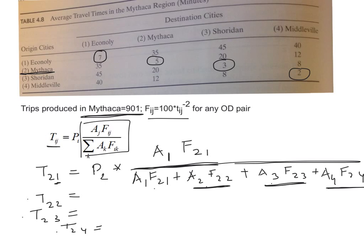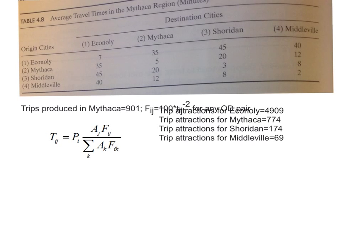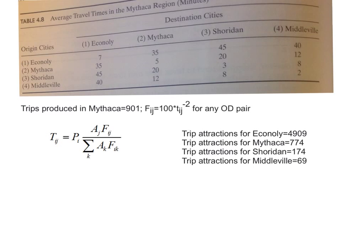We cannot do the exact calculations yet because I haven't yet given you the values of A1, A2, A3, and A4 — the attractions for different zones. Without those attractions, you cannot produce the values of T21, T22, T23, and T24. Now I'm giving you the origin and destination pairs and the attractions for all the trips, so all you have to do is apply the formula from the last slide.